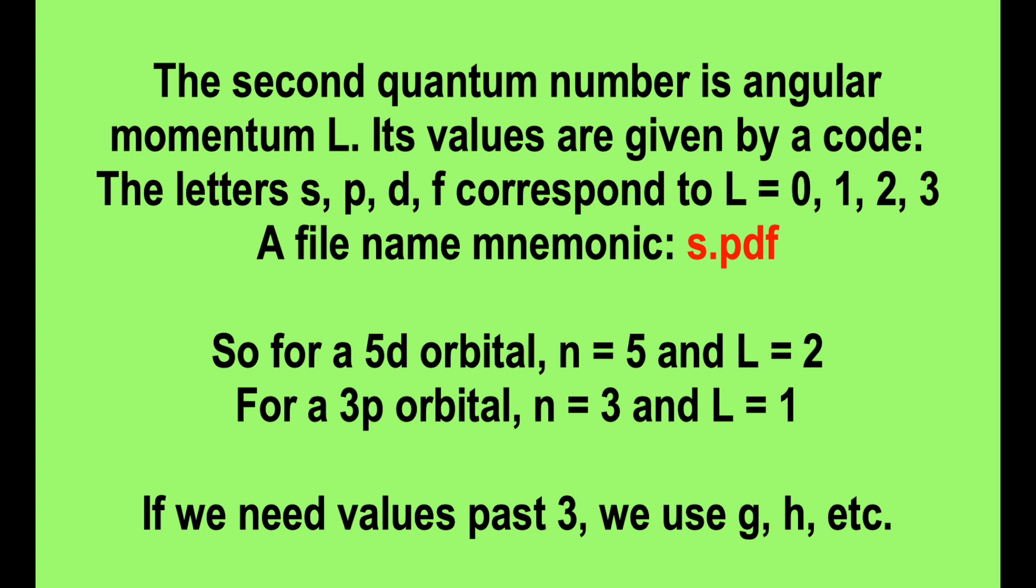A file name mnemonic is s.pdf. So for a 5d orbital, n equals 5 and L equals 2. For a 3p orbital, n equals 3 and L equals 1.